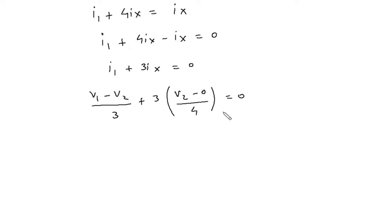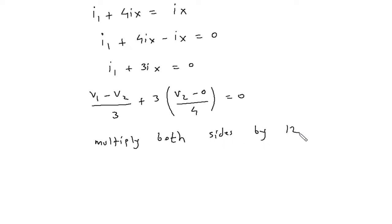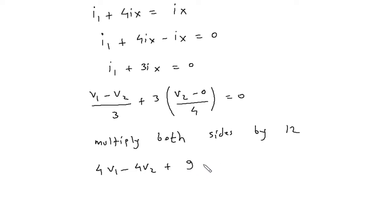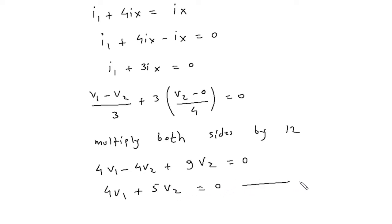We multiply both sides by 12. This gives 4V1 minus 4V2 plus 9V2 equals 0, which simplifies to 4V1 plus 5V2 equals 0. This is equation number 2.